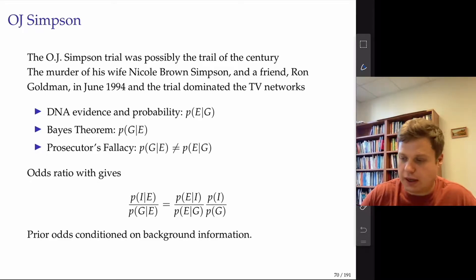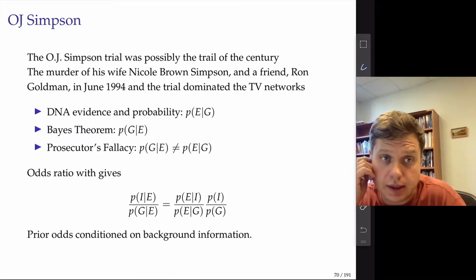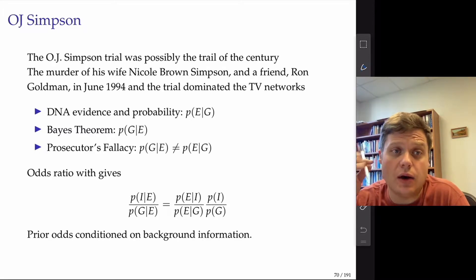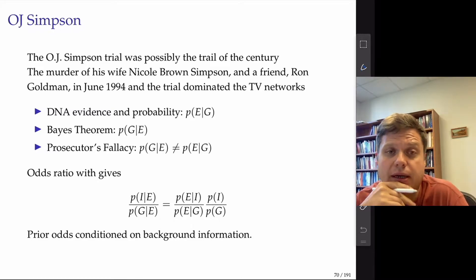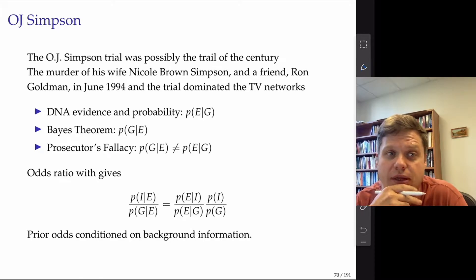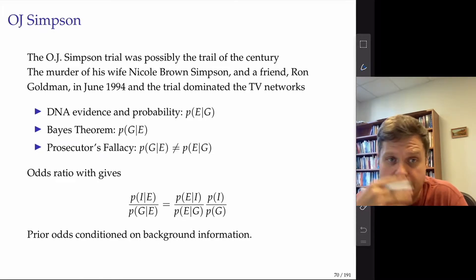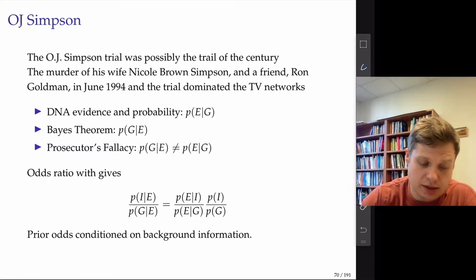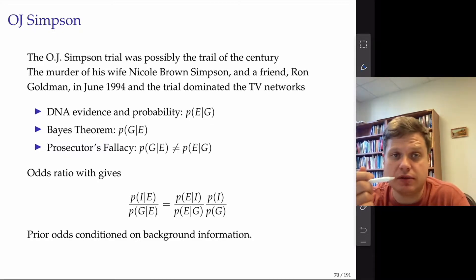One more case is the O.J. Simpson case. It's a court case from the 90s. O.J. was a football player who was accused of murdering his wife, Nicole Brown Simpson, and his friend, Ron Goldman. In the 90s, it was the case that dominated TV networks, and he was let free. We're going to talk about some probabilities involved in this case.